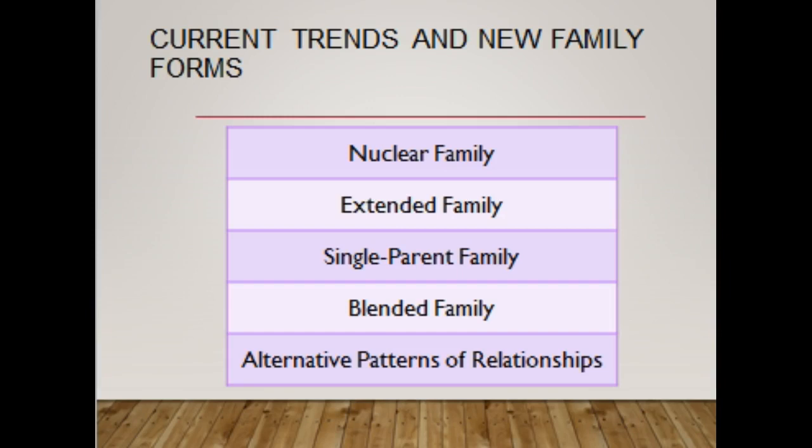Alternative family relationships include multi-adult households, skip-generation families such as grandparents caring for grandchildren, communal groups with children, non-families which are adults living alone, and cohabitating partners. This information is from Box 24-1 in the textbook on family forms.